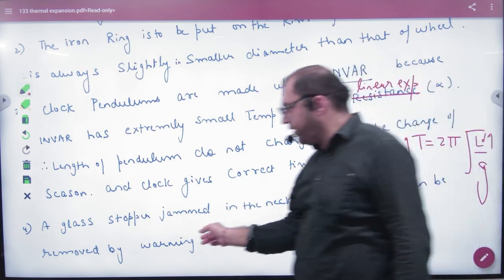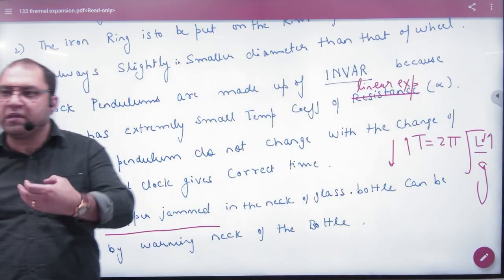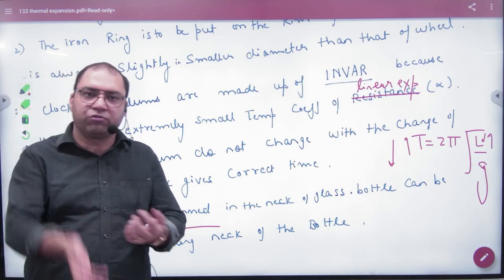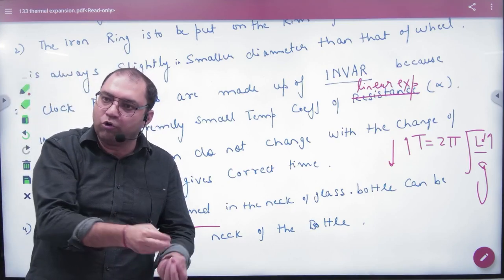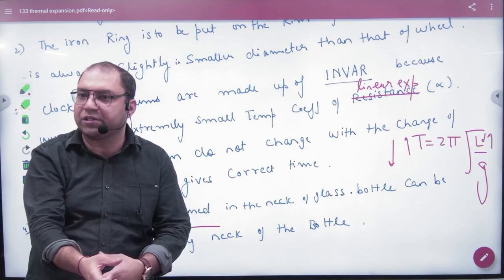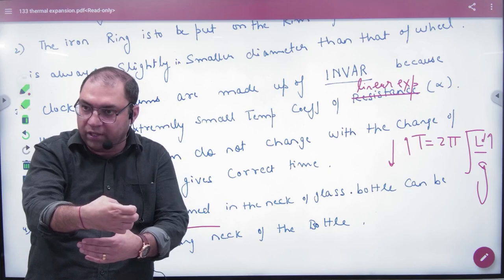The last application is glass bottle stoppers. When a jam bottle cap is stuck and won't open, what do we do? We put it in warm water, and the cap will expand due to thermal expansion and open easily.